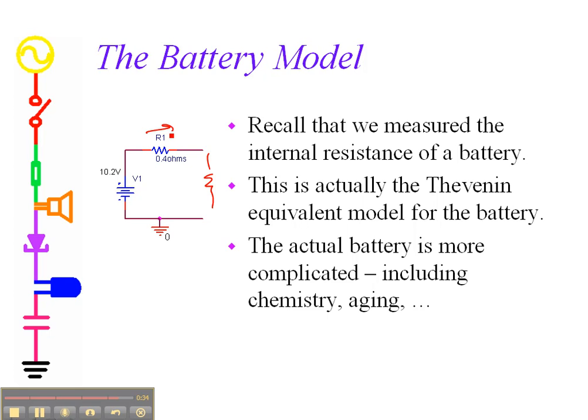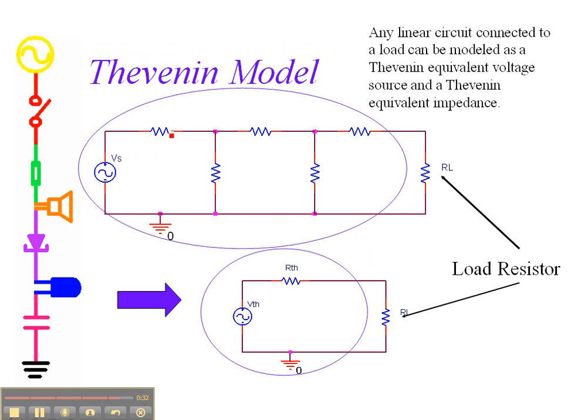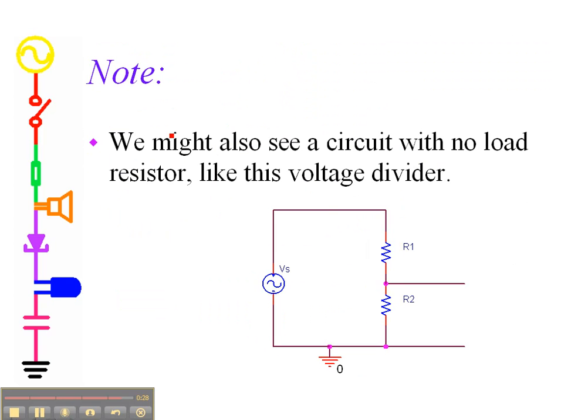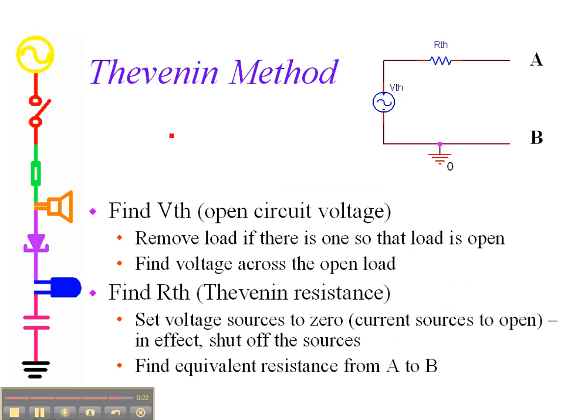In the Thevenin model, we can take any combination and replace it with this simpler effect. We can also do it with a voltage divider, which is one of the more common things we've done. The method is to find the Thevenin voltage and the Thevenin resistance. Here is the approach that we take, and I'll spend a little time on this in the next video.